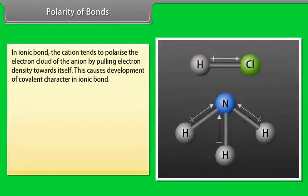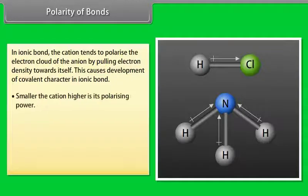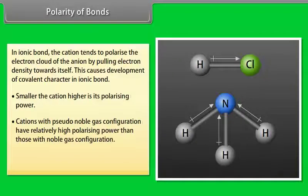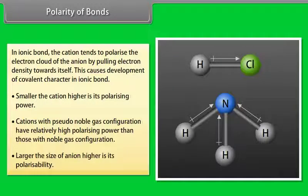Polarity of bonds. In an ionic bond, the cation tends to polarize the electron cloud of the anion by pulling electron density towards itself, causing the development of covalent character in the ionic bond. Smaller the cation, higher is its polarizing power. Cations with pseudo-noble gas configuration have relatively higher polarizing power than those with noble gas configuration. Larger the size of the anion, higher is its polarizability.